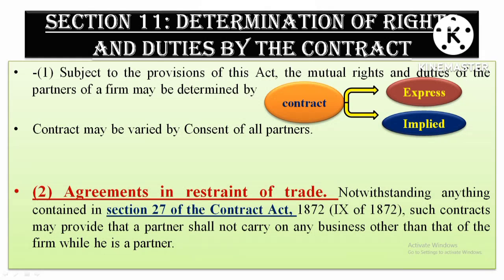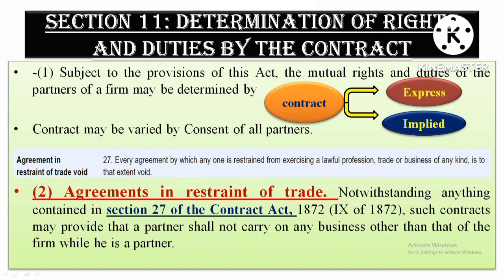After that, section 11 subsection 2 basically has an overriding effect on section 27 of the Contract Act. Section 27 of the Contract Act says that every agreement in restraint of trade — for example, an agreement between A and B restraining trade — is void pursuant to section 27 of the Contract Act. But when we talk about section 11 subsection 2, it overrides section 27 of the Contract Act.